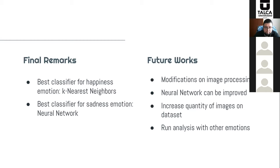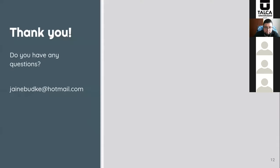As future work, some modifications on image processing will be made, such as analyzing the feature values considered, which can also be done with feature extraction based on intensity of muscle contractions. Additionally, the neural network can be improved, the quantity of dataset used can be increased, and we can expand this analysis to other emotions. Thank you, and feel free to ask any questions.